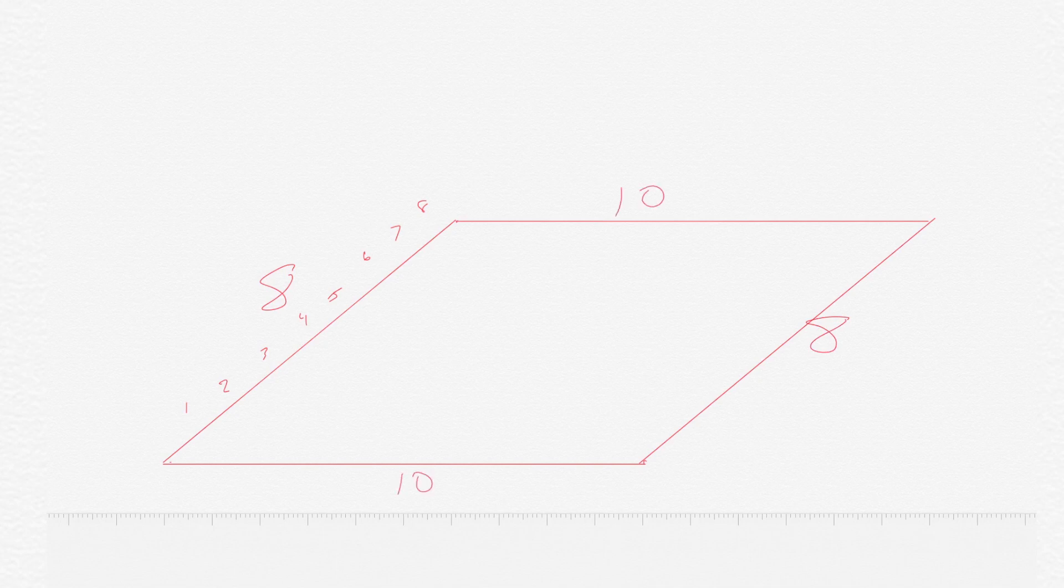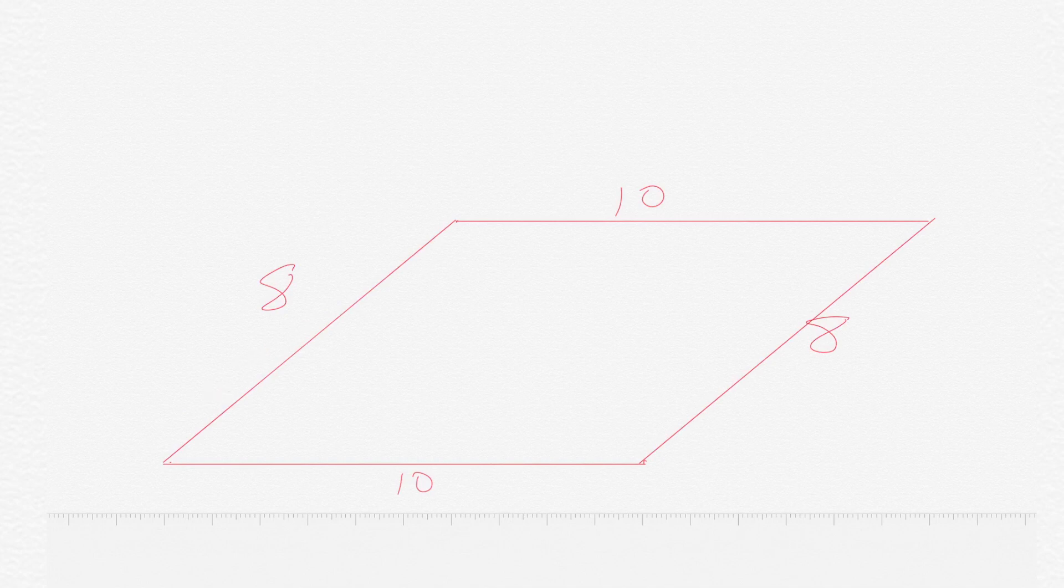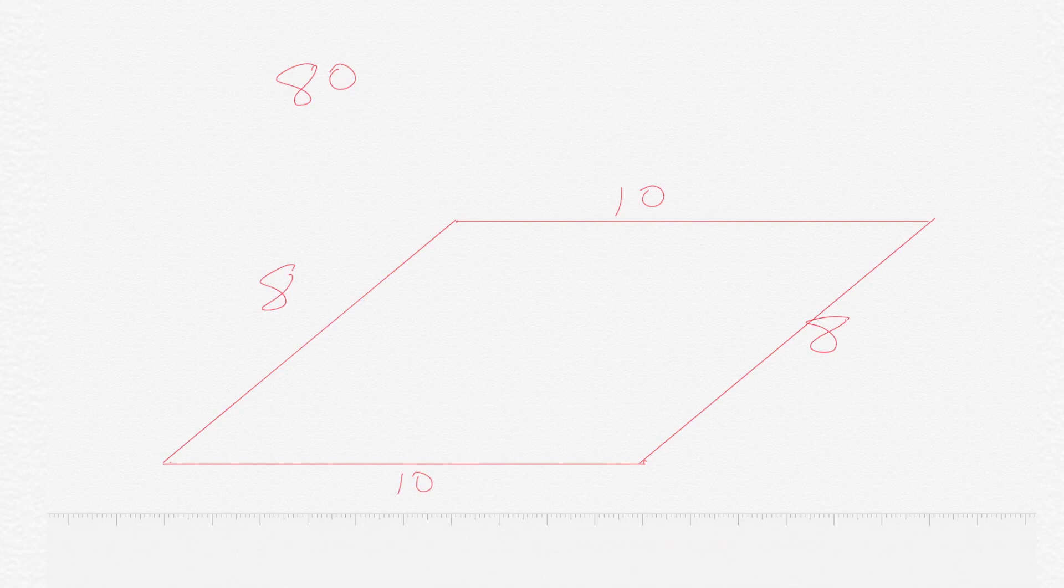Because in the parallelogram, the two bases are equal and those two sides are equal. So it's 8, 8, and 10. So what the question is asking us here is basically what is bigger? Quantity A, which is 80, or quantity B, which is the area of this parallelogram.